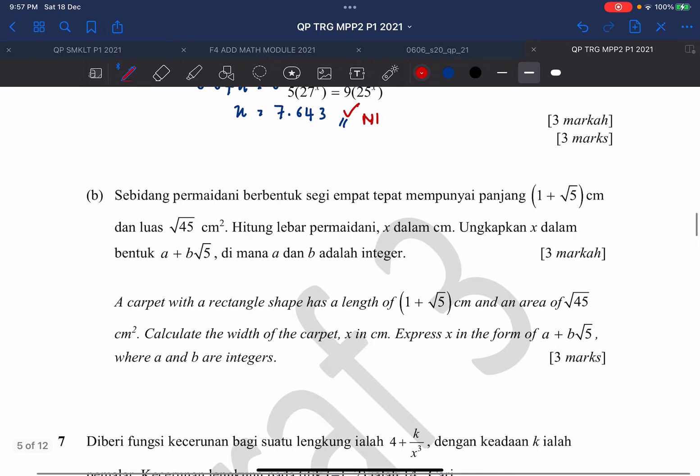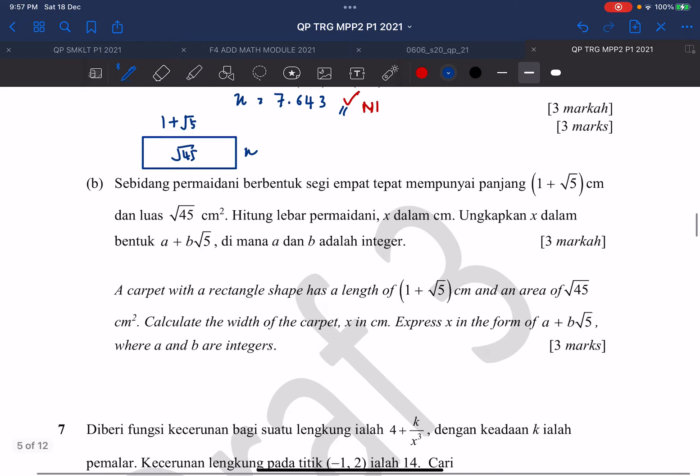The carpet is a rectangle shape. Length is 1 plus root 5, and the width is actually x, and the area is square root of 45. So to find the width, we just take the area divide by the length.